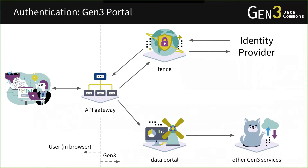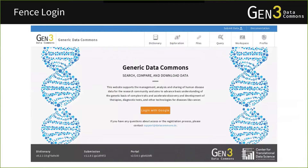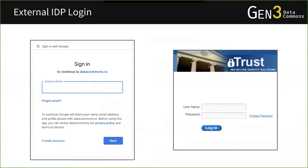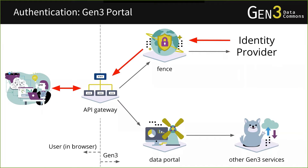We'll walk through a typical flow for a user in a Gen3 commons. Say a user goes to the Gen3 portal and tries to log in. The first step is they go to the Fence login and choose to log in with an identity provider — for example, Google or NIH iTrust. Once they log in through that identity provider, Fence knows who they are. After the user authenticates, Fence gets back the response and the user is logged in.